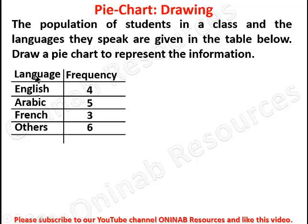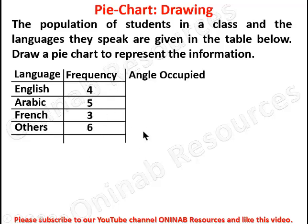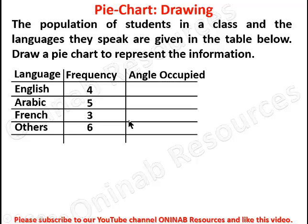We have the column for the languages and the frequency column. We need an additional column that we're going to use to draw the pie chart. The additional column is the angle occupied by each of the languages. To do that, we need to get the total population of the students in the class.